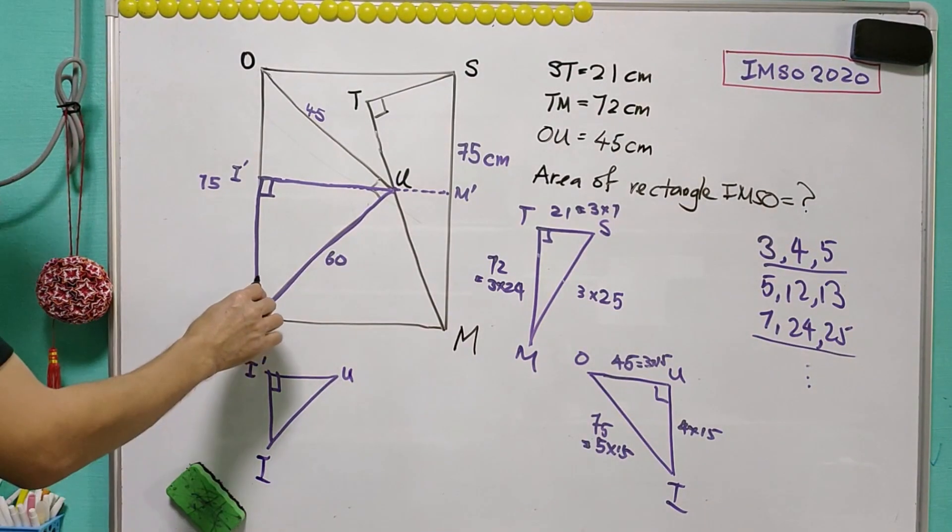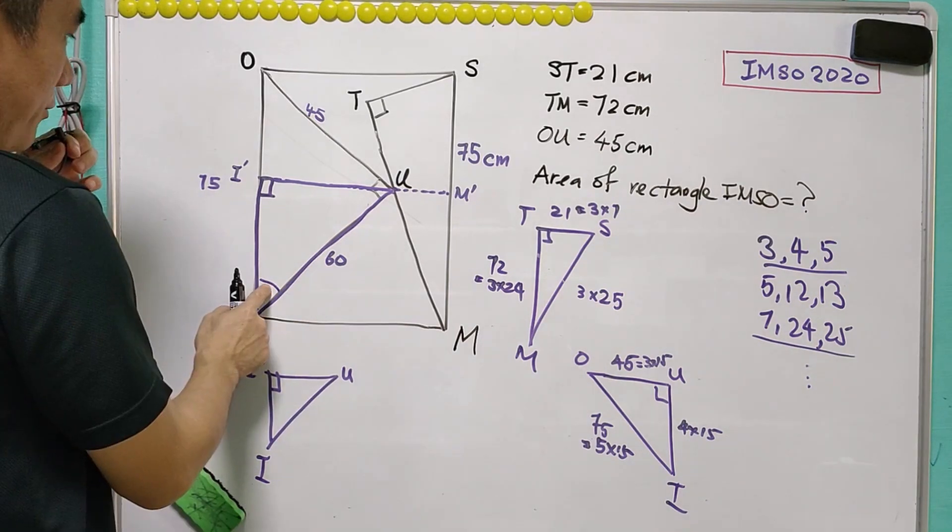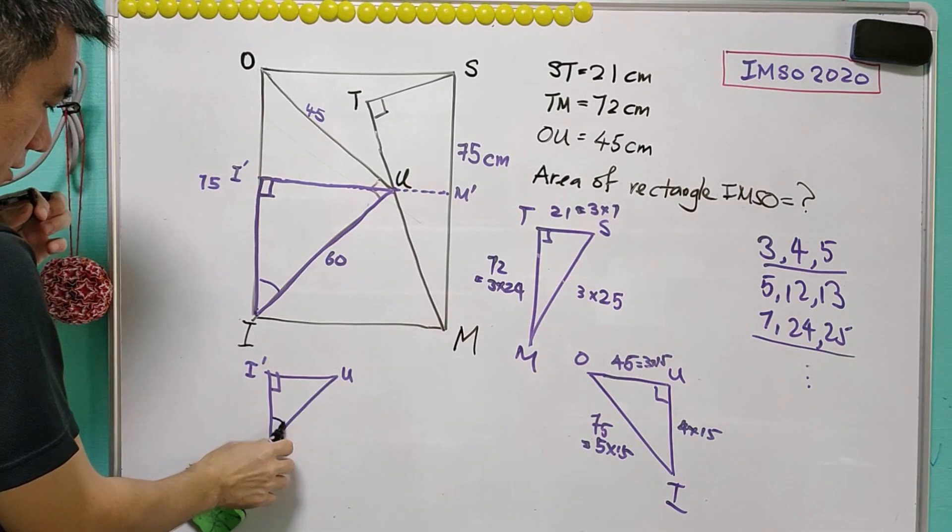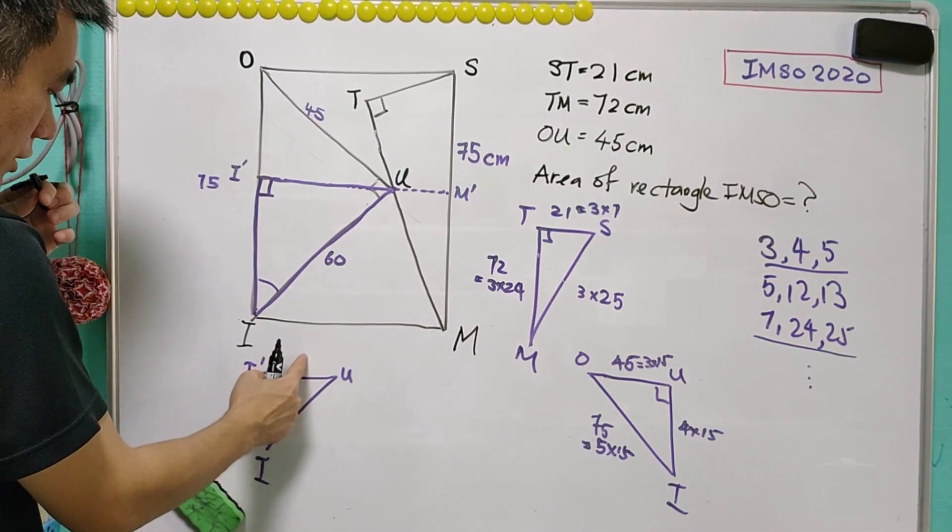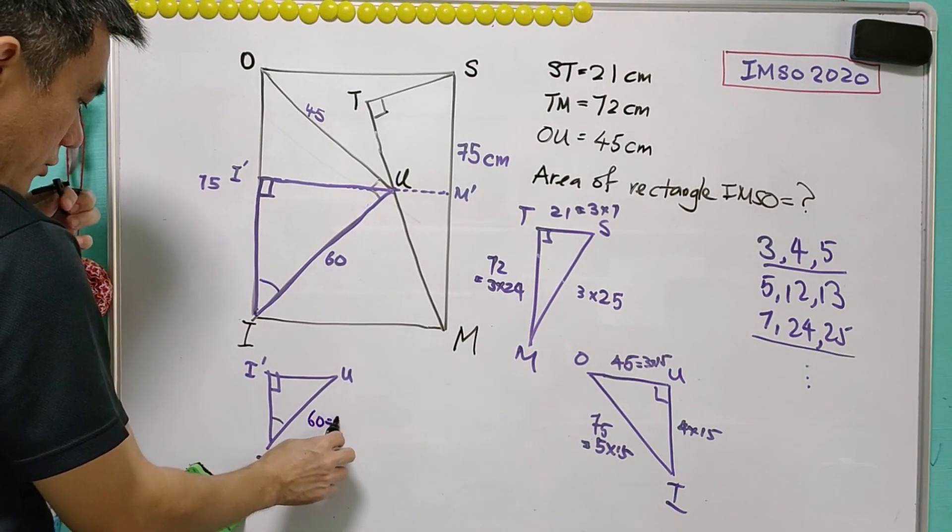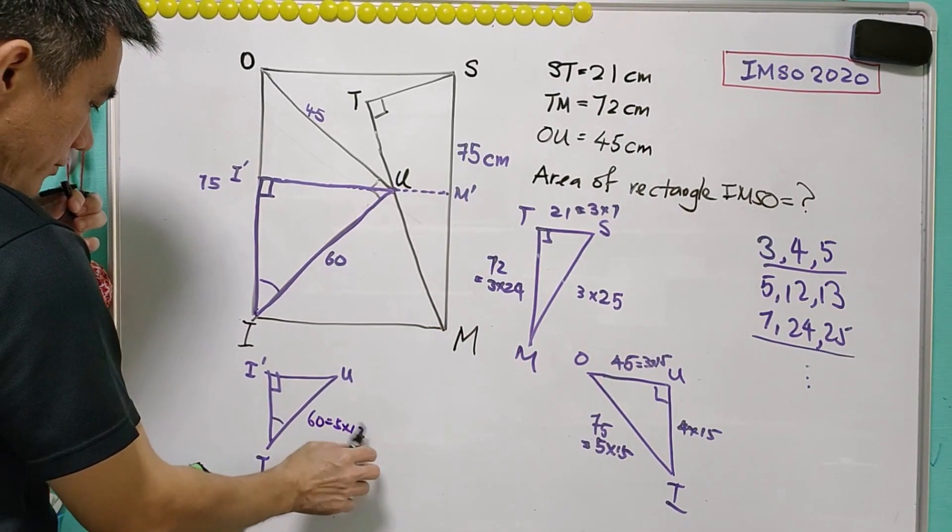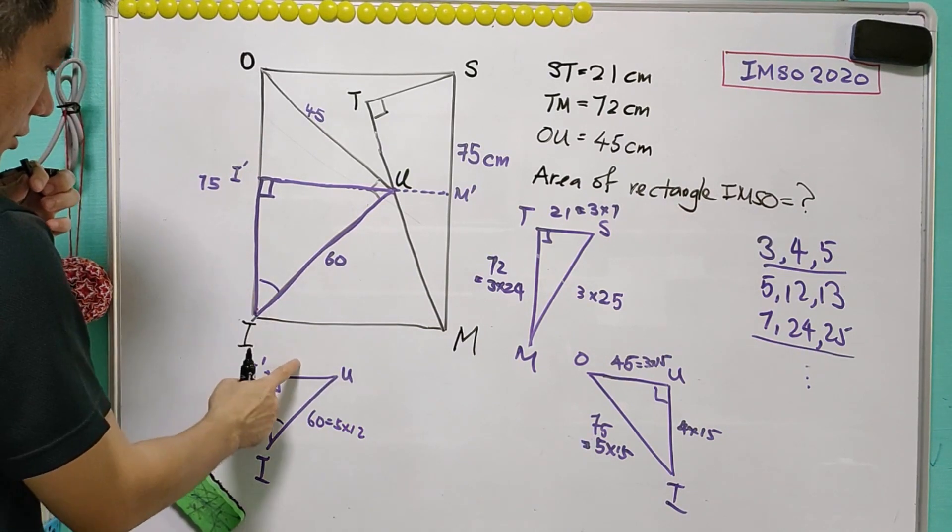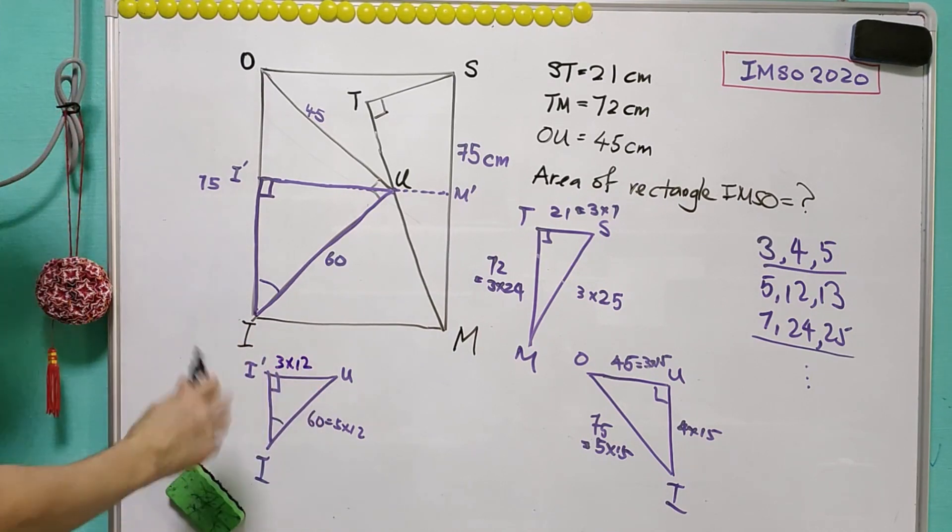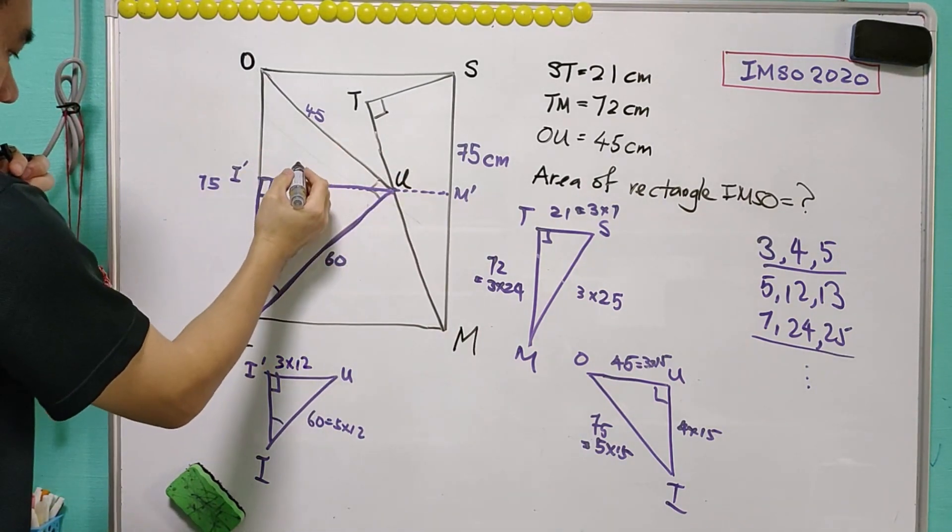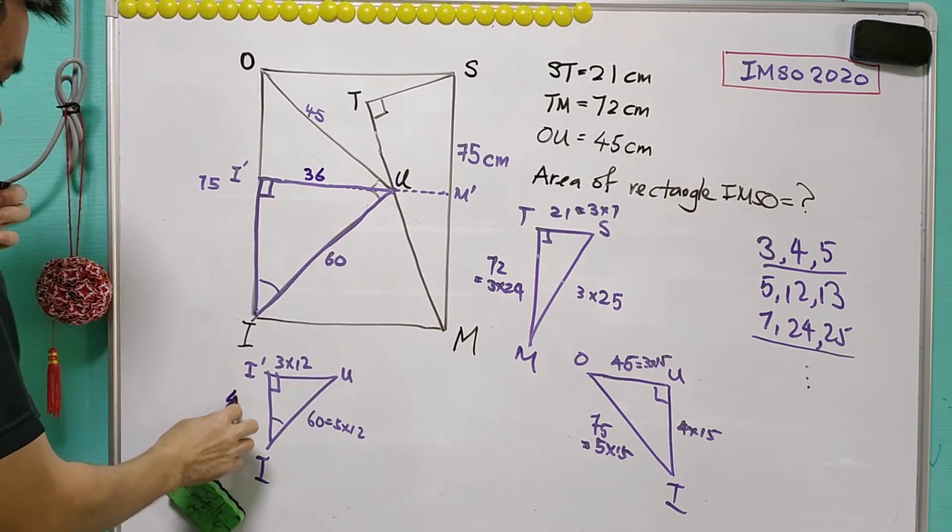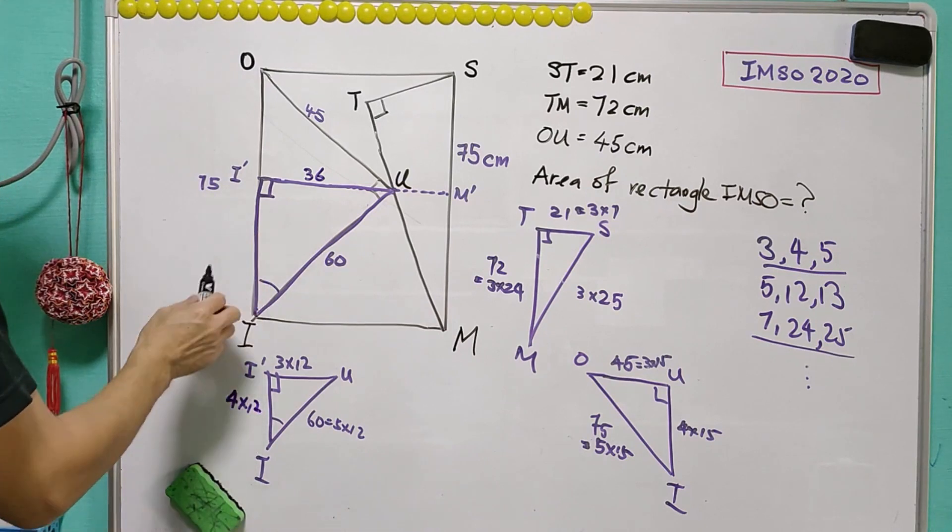Now, initially, maybe we look at this angle. We have 3-4-5, so for this same angle, the ratio should also be 3-4-5. So this is 60 equals 5 times 12, and because this is 3-4-5, this is 3 times 12. So we know that I'U is equal to 36, and I'I equals 4 times 12, that is 48.